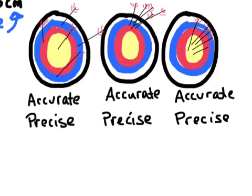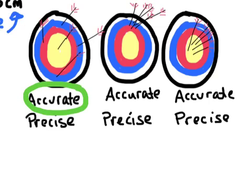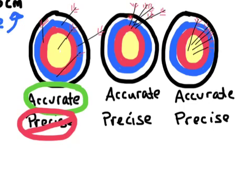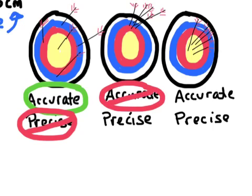Let's look at one more example using three targets with arrows to check our understanding of accuracy and precision. On the first target, five arrows are shot and they are kind of all over the place, but one arrow hit right in the bullseye — so the shooter was accurate but not very precise. On the second target, all the arrows are grouped together above the bullseye — the shooter was precise but not very accurate. On the third target, all the arrows are right in the center of the bullseye — this shooter was both accurate and very precise.